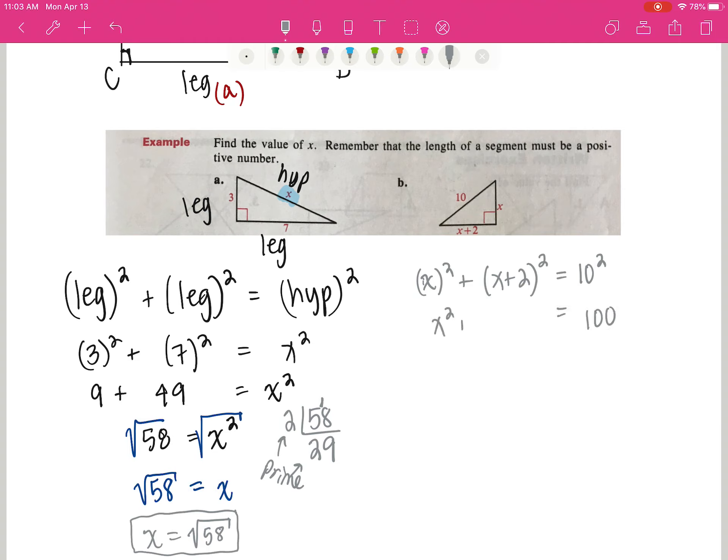So I have x squared plus... Now some of you might be thinking this is x squared plus 4, but it's not. Remember from Algebra 2, x plus 2 quantity squared is x plus 2 times x plus 2. And that foils out to be x squared plus 4x plus 4. I'm going to add the 2x squareds. An x squared and an x squared is 2x squared. So I get 2x squared plus 4x plus 4 equals 100.